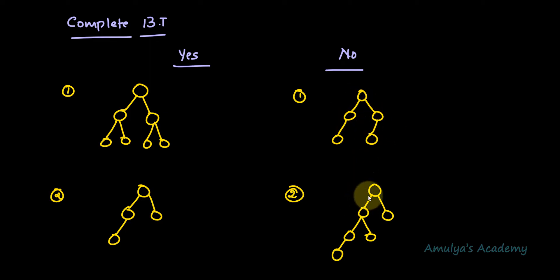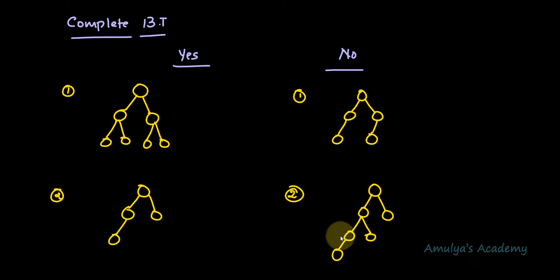Coming back to another example, in this tree all the levels are not completely filled — some levels are completely filled but one level is not completely filled and it is not the last level, so this is not a complete binary tree. If you want the detailed explanation, I'll give you the link to that video in the description box so you can check that out.